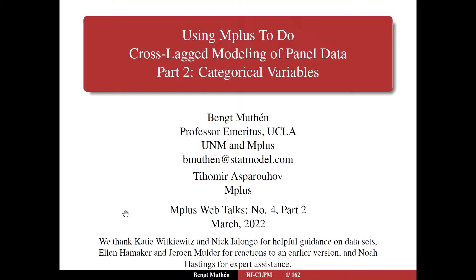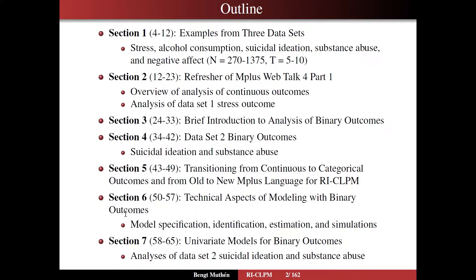Slides 2 and 3 give the outline for the talk. In section 1, I will go through examples from three different data sets. The variables we are going to look at are stress, alcohol consumption, suicidal ideation, substance abuse, and negative affect. The sample size is going to range from around 300 to a little over 1,000, and the number of time points will range from 5 to 10.